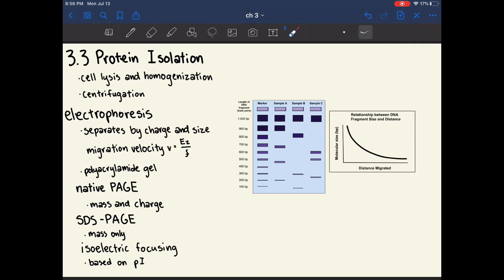The migration velocity of a specific protein is determined by this equation: V equals EZ over F. V is the migration velocity, E is the strength of the electric field, Z is the charge of the protein of interest, and F is the frictional coefficient, which depends on the mass and the shape of the migrating protein.